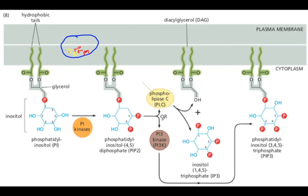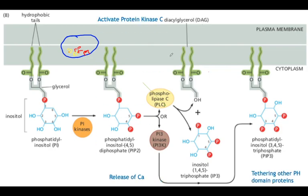The cleavage produces two products: diacylglycerol (DAG) and inositol triphosphate (IP3), because the third phosphate comes from the phosphodiester bond between glycerol and the inositol complex. Diacylglycerol is responsible for the activation of protein kinase C, and IP3 — the free-floating molecule — is responsible for the release of calcium from cellular organelles.